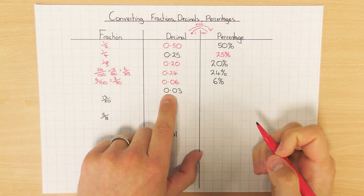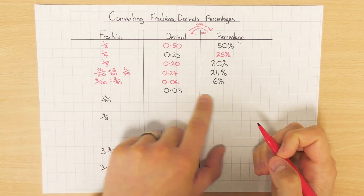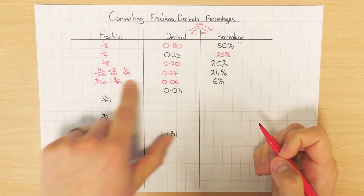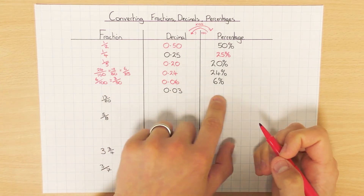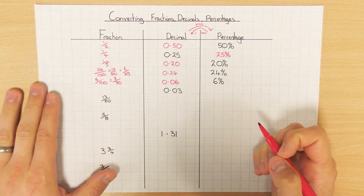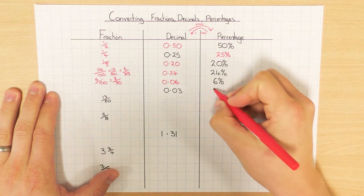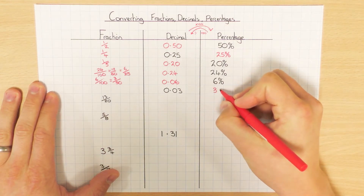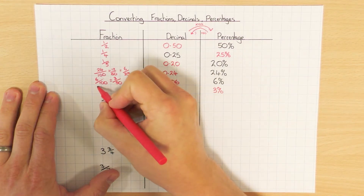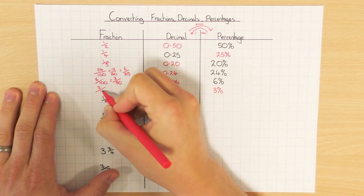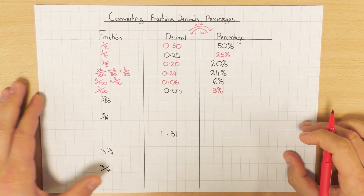This one here — 0.03. I wouldn't go straight to a fraction; it's a bit tricky. What I would do is convert it to a percentage first and then convert it to a fraction. So if you have a decimal and you need to get it to a fraction, put it to a percentage first and then do that step. To go from a decimal to a percentage, I times by 100 — so basically times by 10 and times by 10 again — giving me 3%. And then I'm just going to stick that as 3 over 100. I can't simplify that, so it's done — it's 3 over 100.